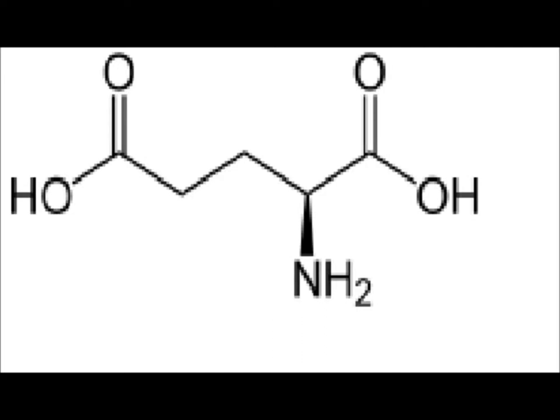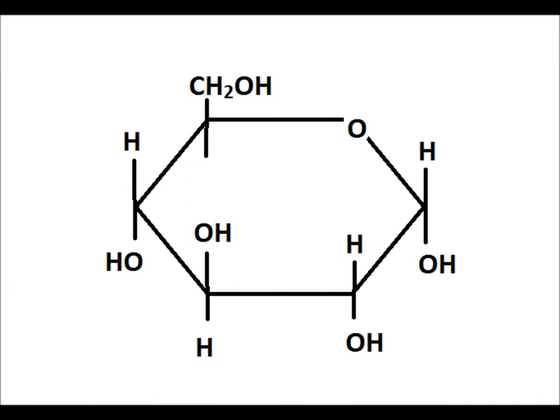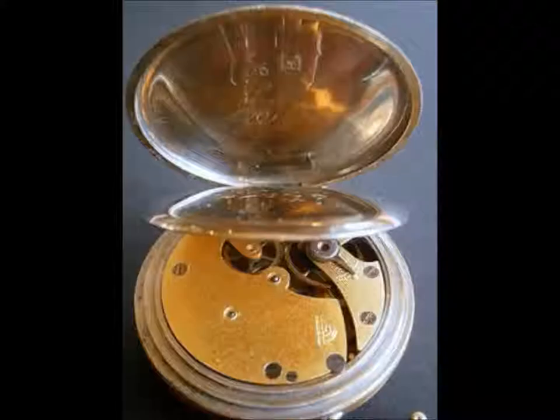An example of this is glutamic acid, which is two glycine molecules. Another is maltose, which is two glucose molecules together. Individually, each of these molecules is easily destroyed by ultraviolet radiation, but together they are stable.